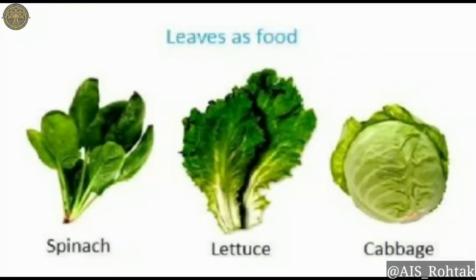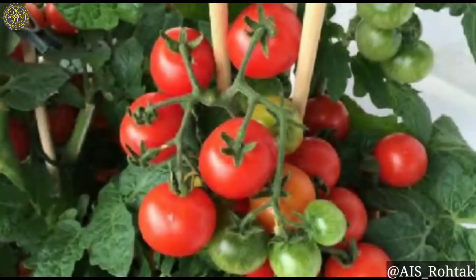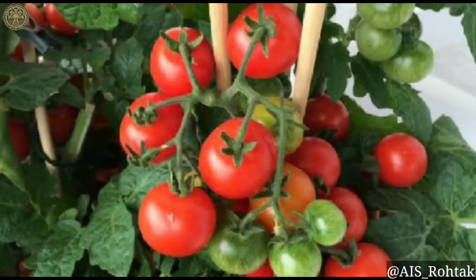Do you know, students, we eat leaves of some plants like spinach, lettuce and cabbage as vegetables. And some plants give us vegetables like potato, tomato, cabbage etc. They are cooked for eating. These vegetables are rich in vitamins, iron and other minerals.